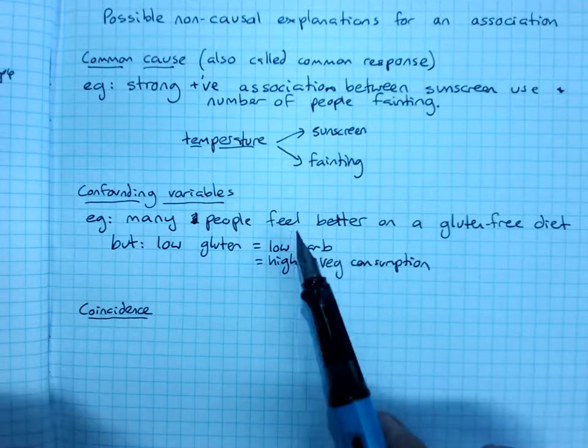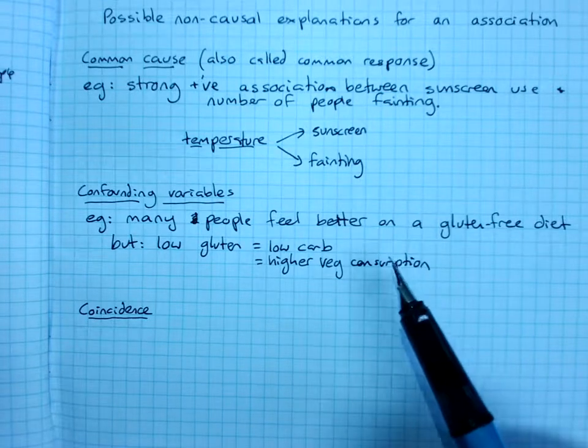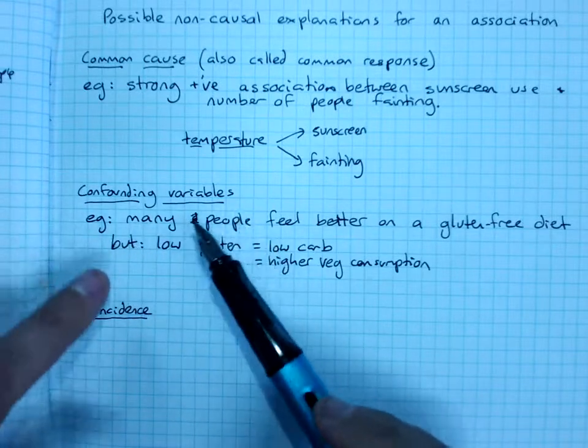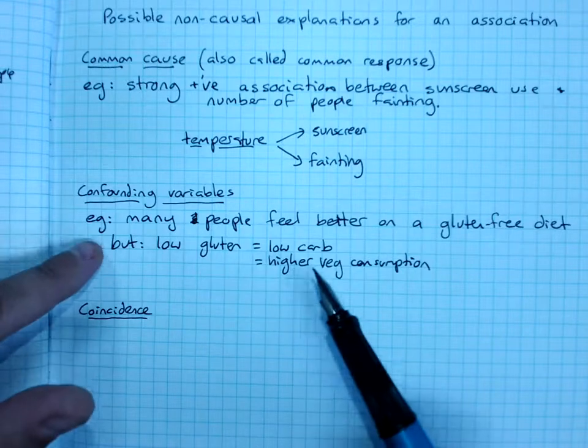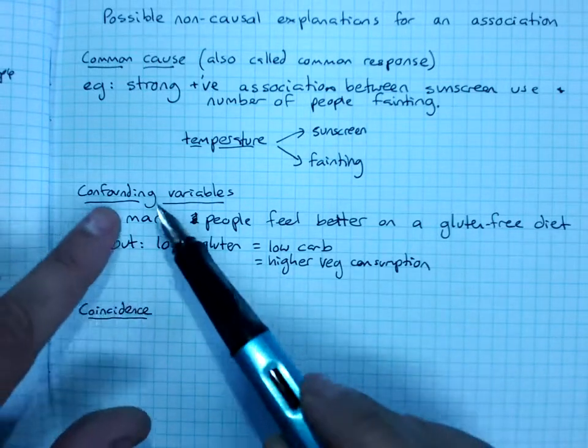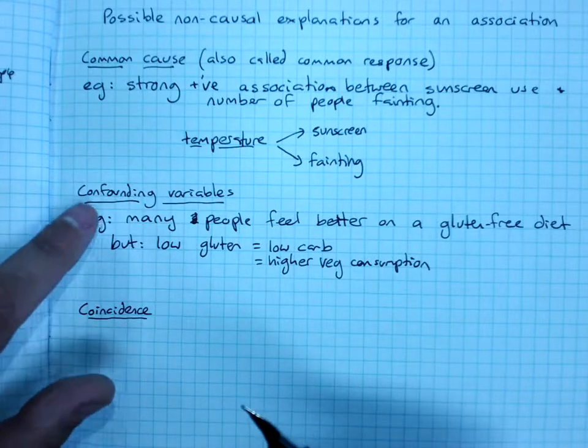It could be that they're actually just getting more exercise because they're doing a focus on their health at the moment. So when there's other variables that could be having an effect, and you really can't untangle them, that's when you start to say, maybe we've got a confounding variable. Confound means to confuse.